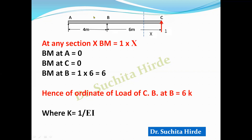There is linear variation of the bending moment diagram. At A, bending moment is 0; at C, bending moment is 0 (free end); and at B, bending moment is 1 × 6 = 6. In the conjugate beam method, M/EI is the load on the conjugate beam, so we divide all ordinates by EI. Let 1/EI = K, so the load ordinate at B is 6K.